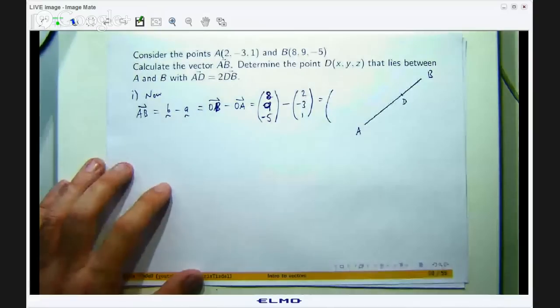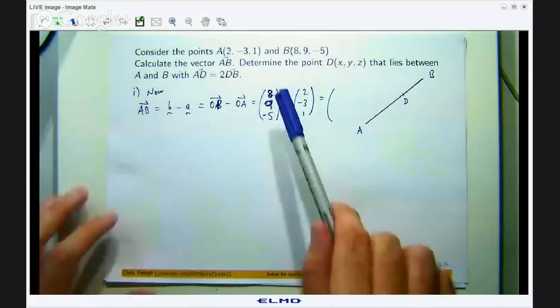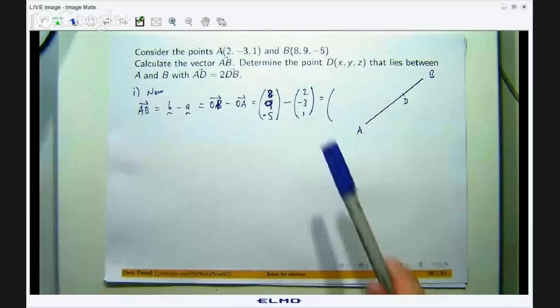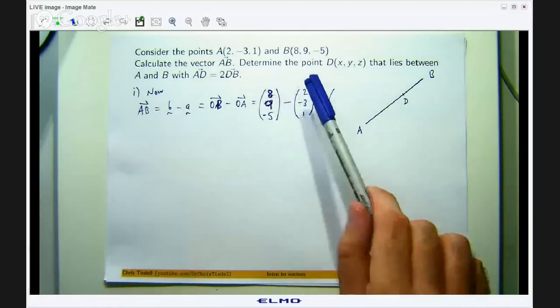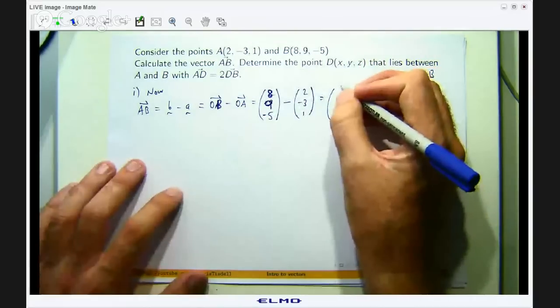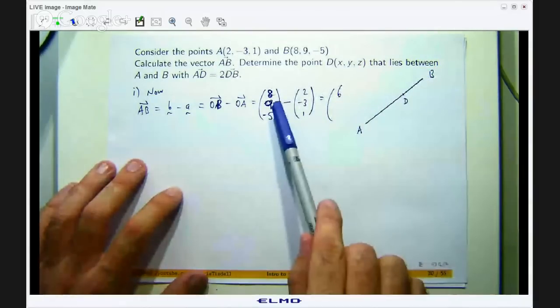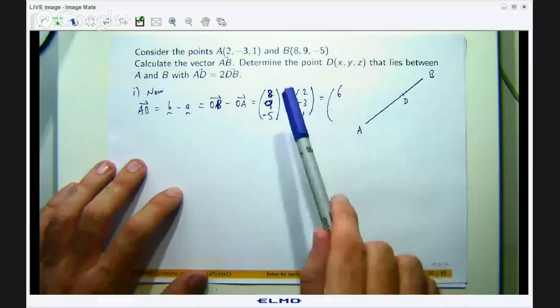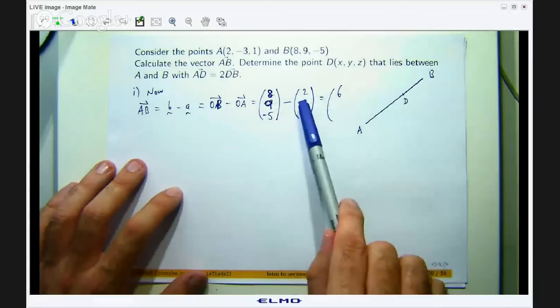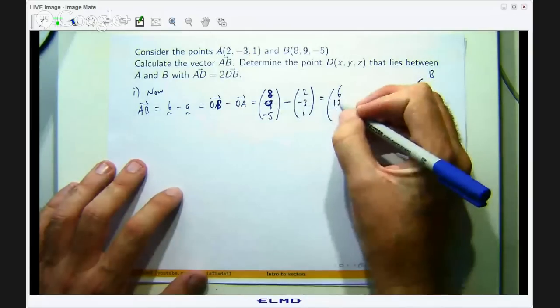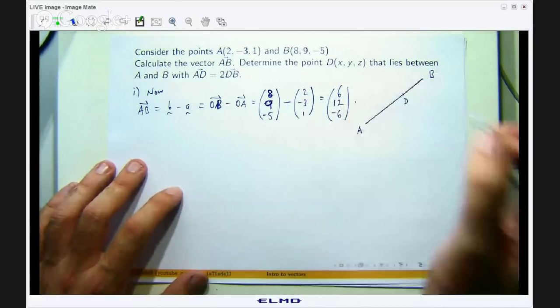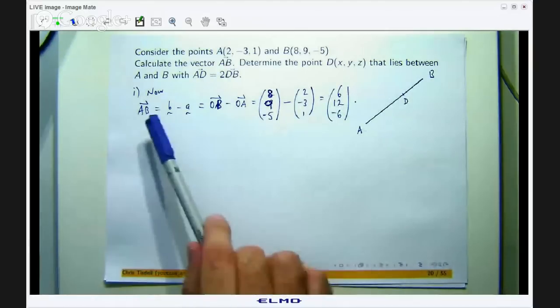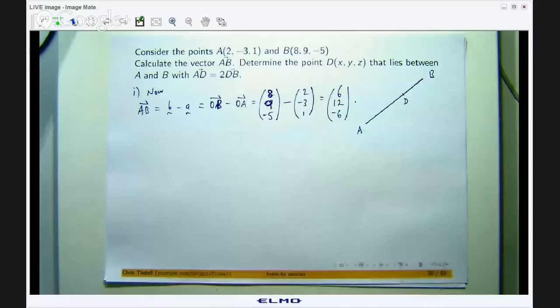Now we know that when we are doing addition or subtraction with these vectors you just work in a component wise fashion. So the first component minus the first component gives me the first component of my answer, second component, third component, etc. So 8 minus 2 gives you 6, 9 minus negative 3 gives you 12 and negative 5 minus 1 gives you negative 6. Alright so that is the vector from this point to this point.